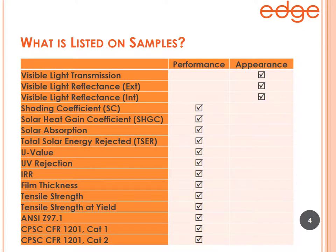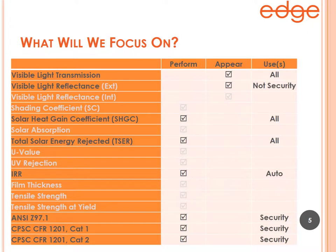When we look at all of those product specifications together and consider this comprehensive list from all the different locations, we see the full list of specifications. Let's take our first slice at this by separating all of these specifications into one of two categories: appearance — what does this film look like — and performance — what is this product going to do or how is it going to perform.